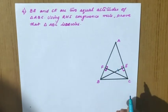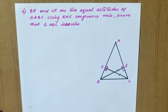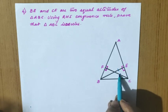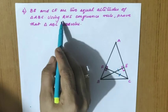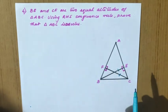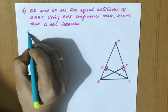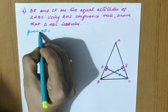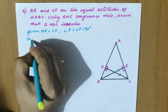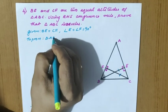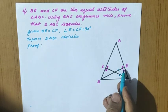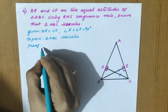Question: BE and CF are two equal altitudes, so BE equal to CF. The two altitudes are equal, and since they are altitudes, angle E and angle F become 90 degrees. We have two equal criteria: one side and one 90-degree angle. Since the question itself asks to use RHS criteria to prove triangle ABC is isosceles, we proceed with that.